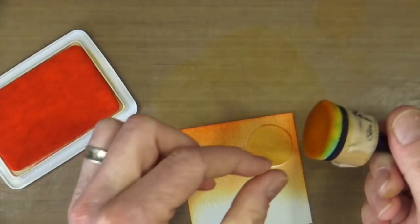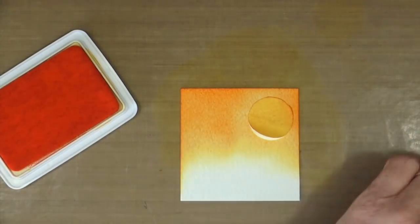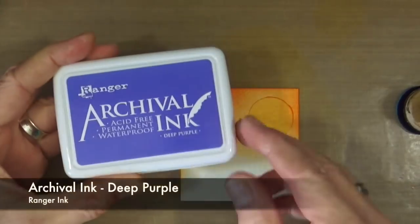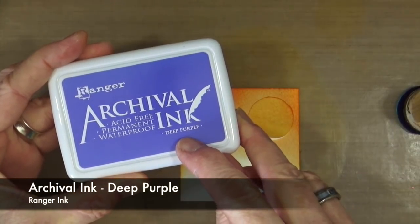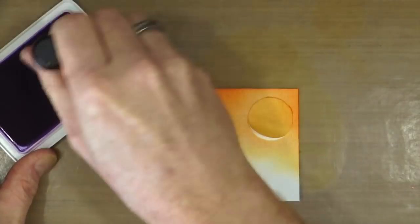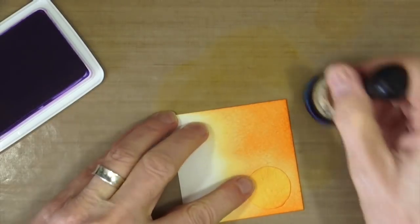Now I want to bring in some darker tones, so I'm going to put the orange away and swap that for deep purple. This is archival ink in deep purple and I'm going to start applying that around the edges as well. This gives us the impression that it's starting to get a little bit dark.